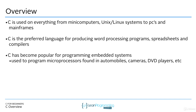It has become very popular for programming embedded systems. Embedded systems are things like microprocessors found in automobiles, cameras, and DVD players. Embedded usually implies the program has to be efficient — it's running on not as much memory, not as much high-level hardware. So with embedded you also think of real-time programming, and C has become quite popular in that space because it is so efficient.